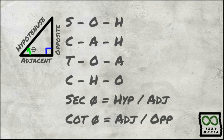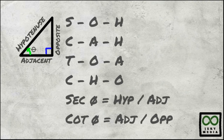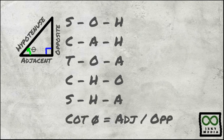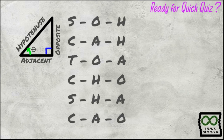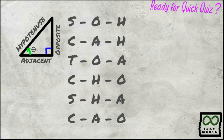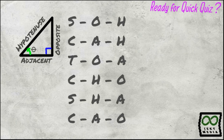For cosecant, you can use C-H-O: C for cosecant, H for hypotenuse, O for opposite. For secant, you can use S-H-A: S for secant, H for hypotenuse, A for adjacent. For cotangent, you can use C-A-O: C for cotangent, A for adjacent, O for opposite. So the mnemonic becomes: SOH-KAH-TOA, CHO-SHA-KAO — now that's easy to remember!